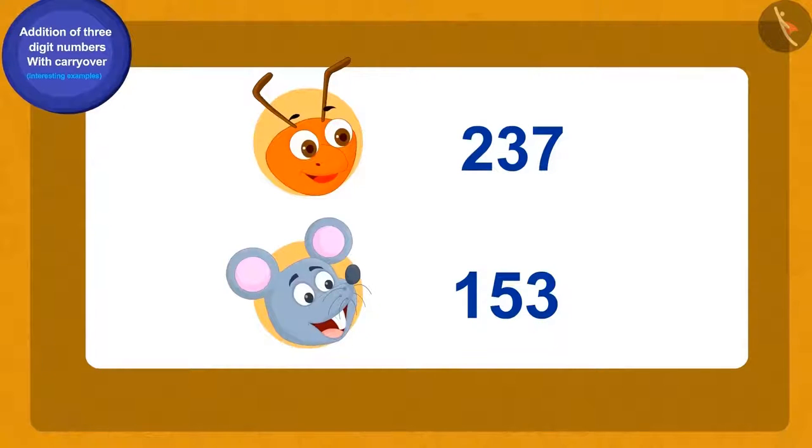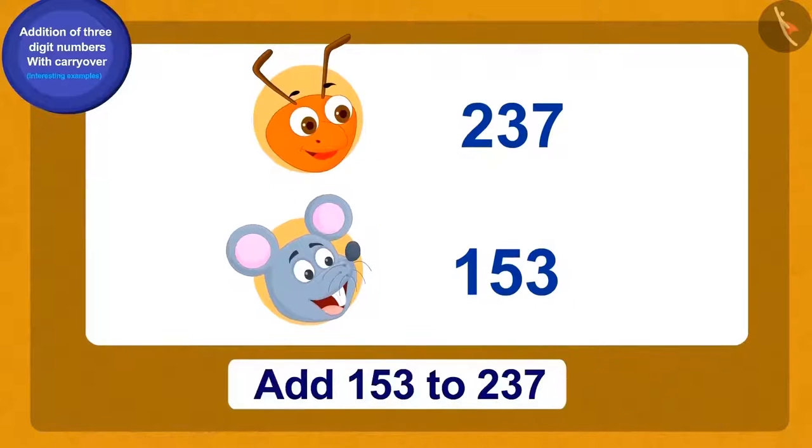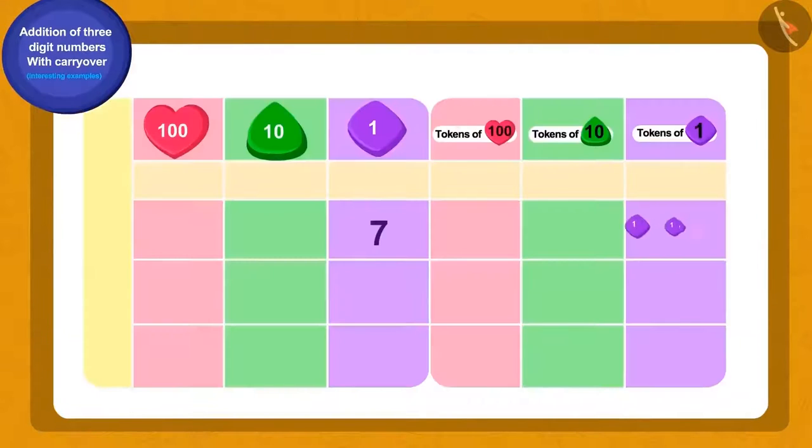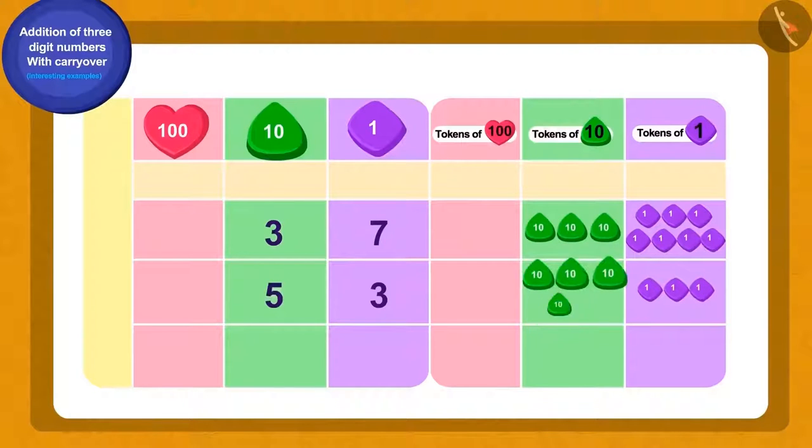There were 237 ants and 153 rats. Can you tell how many total animals were there in the herd? To find the total number of animals of the flock, we will add 153 to 237. What shall we do first?